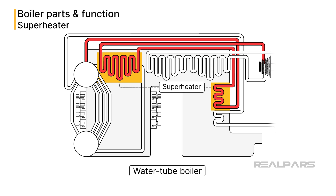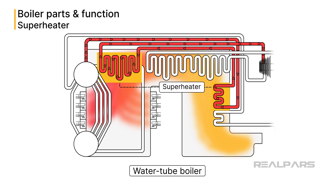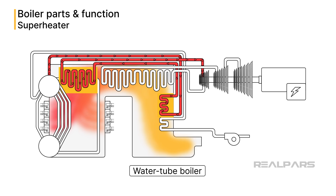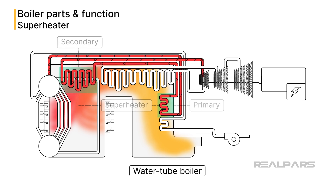Superheaters are tubular heat exchangers placed in the path of the boiler's combustion heat, or hot gases, with steam flowing through the tubes. The purpose of the superheater is to increase the steam's temperature and remove moisture. In power plants, the needs of the steam turbine are the determining factors for boiler control conditions. To provide the desired temperature to the steam turbine, temperature control equipment is needed, requiring at least two zones called primary and secondary superheaters. In some boiler designs, additional temperature controllers known as D-superheaters are used between the primary and secondary superheaters.